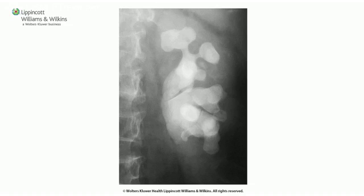This alkaline environment promotes formation of struvite stones, which can coalesce to form large staghorn calculi in the renal pelvis. These staghorn calculi can cause obstruction of urine, which further promotes Proteus growth, increasing urease secretion, increasing alkalinity, and further enhancing stone formation — a vicious cycle that can actually destroy a kidney. Remember: Proteus, urease, and struvite stones.